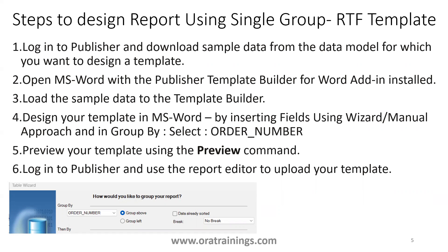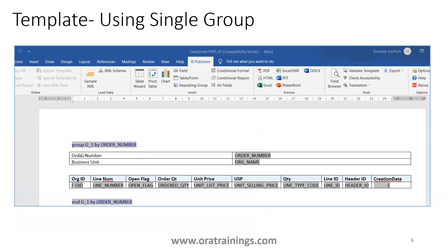When you perform a group-by, the wizard creates a grouping for-loop on top with the child data inside. Here, group G_1 is the grouping logic — all data in the data model gets grouped by that column, and the remaining columns repeat for each order number. You can also manually format elements like order number and business unit by creating them manually.